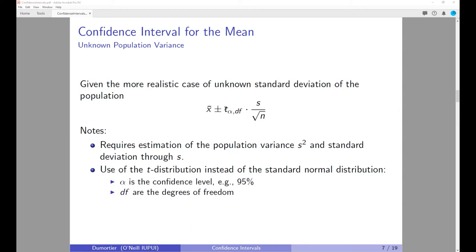On a side note: the term 'Student distribution' comes from the fact that the person who invented it was working for the brewery Guinness in Ireland, and his employer didn't allow him to publish the paper under his real name, which was William Gossett. In order to publish the paper anyway, he chose the name 'Student,' and hence 'Student distribution.'